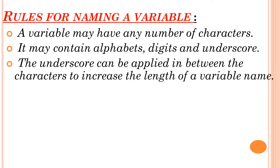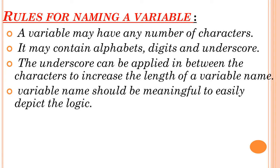The underscore can be used in between characters to increase the length of a variable name. For example, a_b — if you write a underscore b, the computer will take it as 'ab' only, but the length of the variable is increased. Also, variable names should be meaningful to easily depict the logic, which will be helpful for further programming as well.